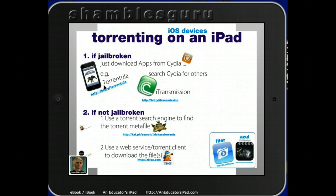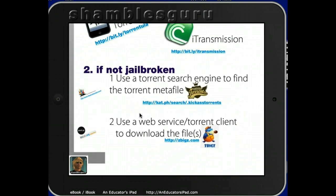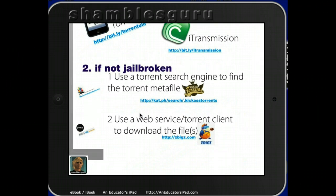You can download from Cydia apps to do all the torrenting for you in one go. Two examples: one is called Torrentula — clever name — and another is called iTransmission. So if it's jailbroken, just get those, do a search for whatever you're looking for — a book, a film, a TV program — and it will download it for you. If it's not jailbroken, then you have to do two things. One is you use a torrent search engine to find your book or digital media and to find a torrent meta file, which you then use in a torrent client to download the file.